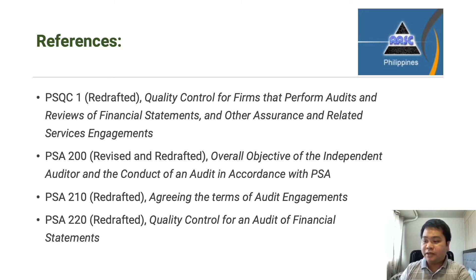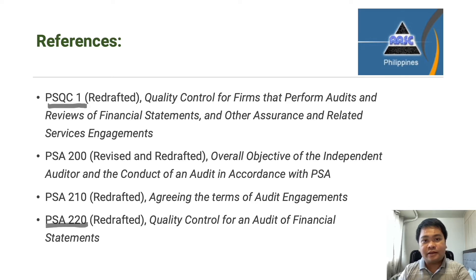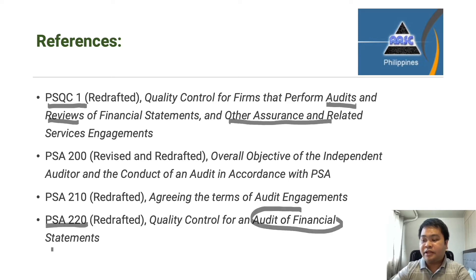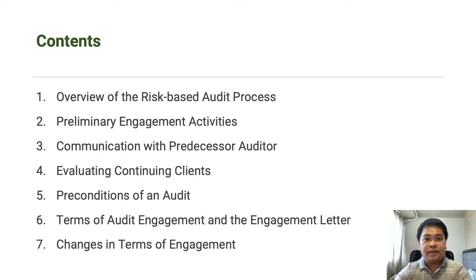We also have PSA 220 redrafted on quality control for an audit of financial statements. PSQC 1 and PSA 220 are similar in that both discuss quality control standards. The difference is their scope: PSQC 1 covers quality controls for firms that conduct audits and reviews of financial statements, other assurance and related service engagements, whereas PSA 220 focuses on quality control over the audit of financial statements only.